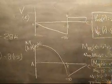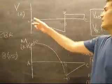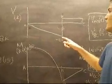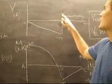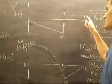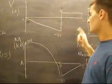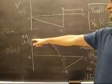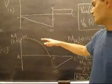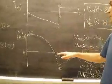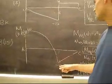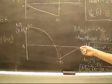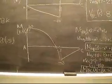We have our shear at A equaling 0, and it goes down to negative 20 at B, then jumps 28 kips at B and goes over to C where it drops back down 8 kips. Our moment diagram starts at 60 kip-foot and has a quadratic slope down to negative 40 kip-foot, then a linear slope to 0 kip-foot.